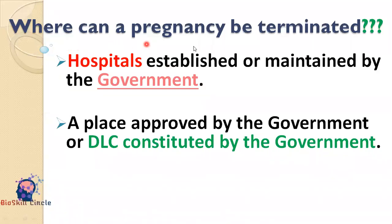Where can a pregnancy be terminated? The operation must take place in a hospital established or maintained by the government, or a place approved by the government or the DLC constituted by the government.